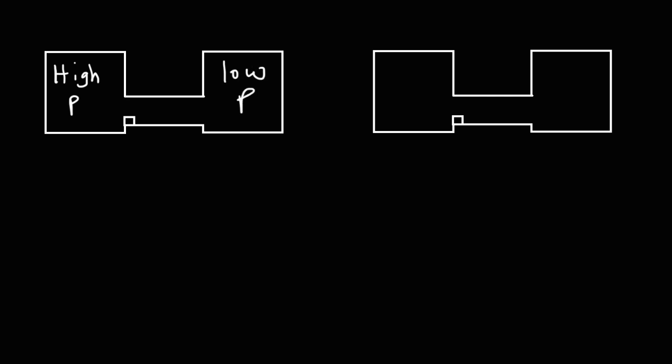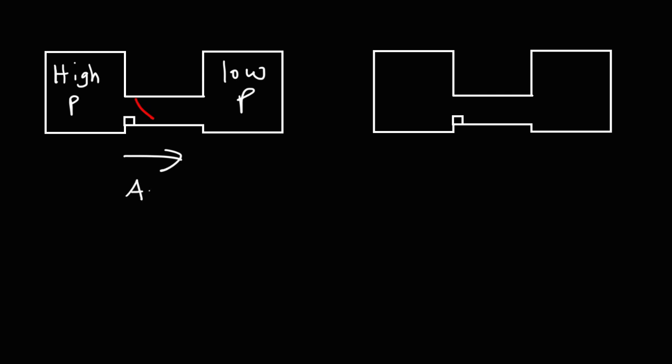For the picture on the left, the left chamber has more pressure than the chamber on the right. The valve is currently closed, as represented by the red line. Because the left side has higher pressure than the right side, air is going to flow from left to right. As a result, it's going to push the valve open in order to do so. The valve opens and air flows to the right side.